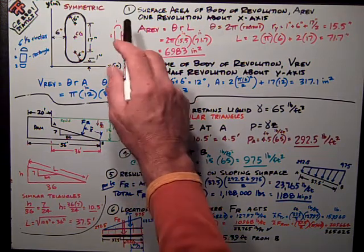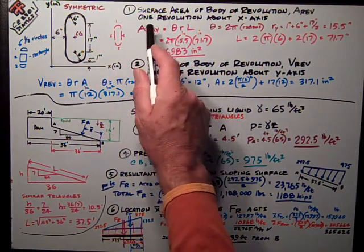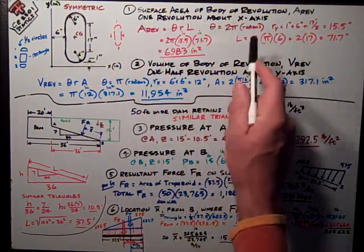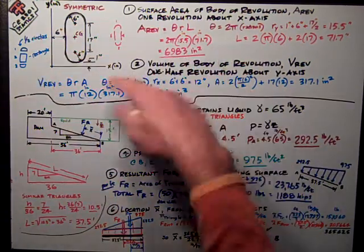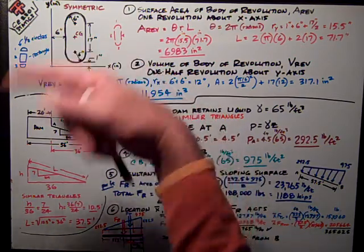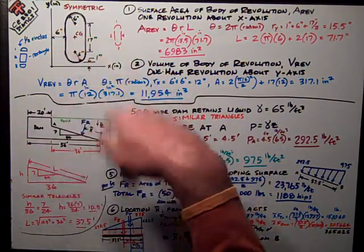The first problem was, determine the surface area of the body of revolution, which you rotate this thing one revolution, one complete revolution about the x-axis. So you're going to get sort of a donut-shaped thing.